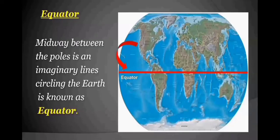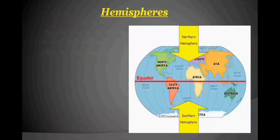Let's see what is equator. The midway between the poles is an imaginary line circling the earth. It is the equator. Can you see the red line? This is called an equator.